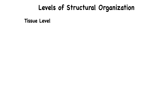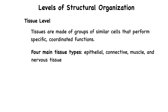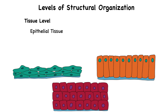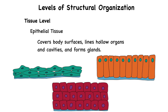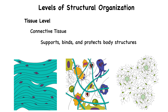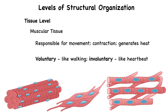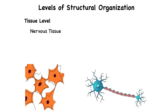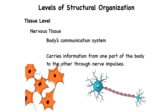Tissues are made of groups of similar cells that perform specific coordinated functions. The four main tissue types in the body are epithelial, connective, muscle, and nervous tissue. Epithelial tissue covers body surfaces, lines hollow organs and cavities, and forms glands. Connective tissue supports, binds, and protects body structures; it also stores energy and transports substances, and it's rich in blood vessels that supply other tissues. Muscular tissue is responsible for movement — whether voluntary motion like walking or involuntary actions like your heartbeat — muscle tissue contracts to make things move, and in doing so generates heat. Nervous tissue is the body's communication system; it carries information from one part of the body to another through nerve impulses or action potentials.